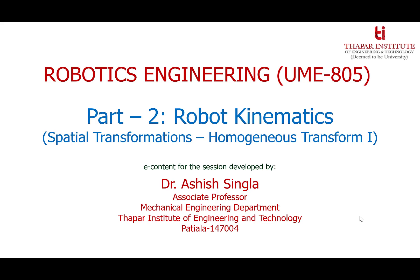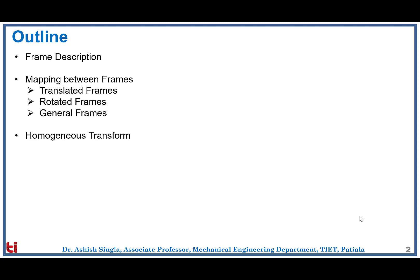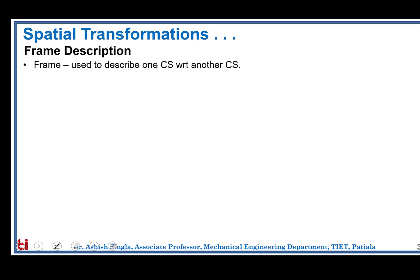Good morning. In this session we will continue our discussion in robot kinematics, specifically on spatial transformations which leads to the homogeneous transform. In the last session we discussed about the position and orientation of any given body with respect to a universal coordinate system. In this session we will describe the frame description which is rigidly attached to any moving body, then discuss mapping between different frames like translated frames, rotated frames, and frames in general. Finally we will conclude with the homogeneous transform.